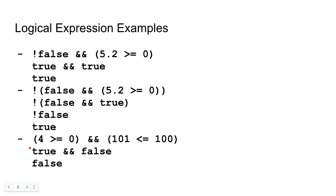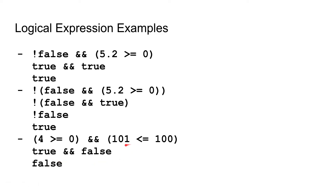Next, let us look at this example: we have a set of parentheses which is 4 is greater than or equal to zero, and then we and that together with another set of parentheses, which is 101 is less than or equal to 100. So 4 is greater than or equal to zero gives us true, and 101 is not less than or equal to 100, so we get false. True and false, from our truth table, is false.